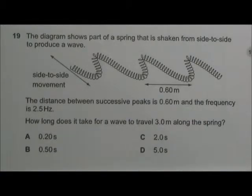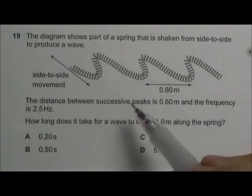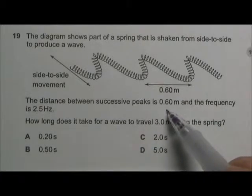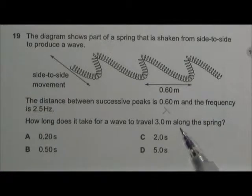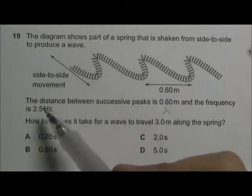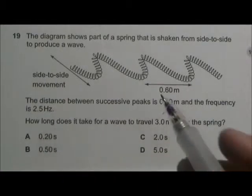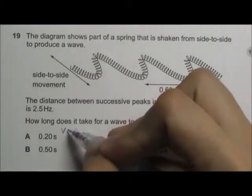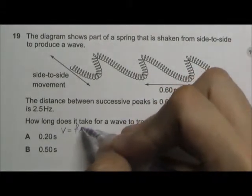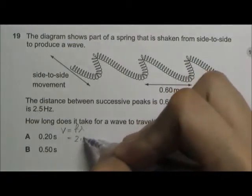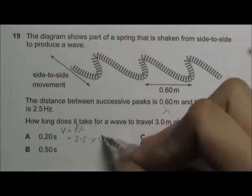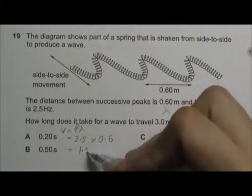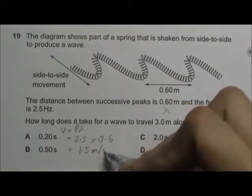We are given a wave and the distance between the successive peaks is 0.6 meter, this is the wavelength. We are given the frequency is 2.5 hertz, so with this you can find the speed. The speed of the wave is equal to F lambda, it will be 2.5 multiplied by 0.6, we get 1.5 meter per second.